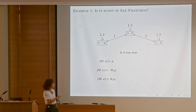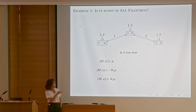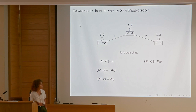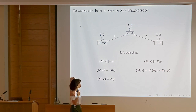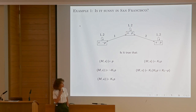Does agent one know P at world v? Wherever I go from v with the accessibility relation of agent one, P will hold — so in this world, the agent knows it. Does agent two know P at state s? Yes, because wherever he goes, P is true. Now, does agent one know that agent two knows P, or that agent two does not know P — the 'knowing whether' question? Is it the case that agent one knows that the other agent has this knowledge?